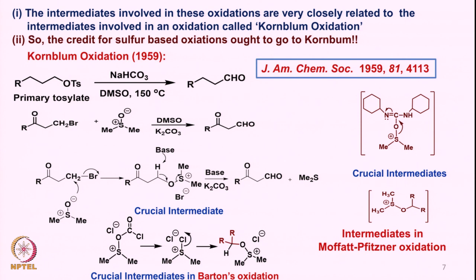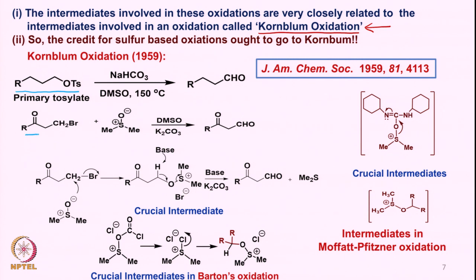Going back to the literature, these crucial intermediates of two different kinds are essentially related to yet another very important oxidation — the basis for all oxidations involving sulfur — known as Kornblum oxidation. It was Nathan Kornblum who discovered this in 1959. The Kornblum oxidation involved the reaction of a primary tosylate or bromide, starting with very good leaving groups on a primary carbon atom.